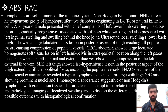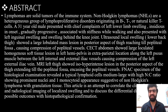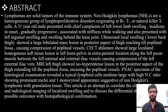CT abdomen showed a large loculated homogenous soft tissue lesion in the left hemipelvis in an extra-peritoneal location along the left psoas muscle, between the left internal and external iliac vessels, causing compression of the left external iliac vessels. MRI of the left thigh showed an iso-to-hyperintense lesion in the posterior aspect of the thigh extending to the popliteal fossa, encasing the popliteal vessels. FNAC histological examination revealed atypical lymphoid cells — medium to large cells with high N:C ratio showing prominent nuclei — suggestive of Non-Hodgkin's Lymphoma.